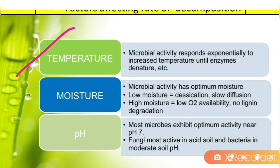These are the factors which affect the rate of decomposition. First, temperature: microbial activity responds exponentially to increasing temperature until enzymes denature. Microbial enzymes are active at optimum temperature, which must be maintained, otherwise decomposition will not happen. Second, moisture: moisture is required for microbial growth, and optimum moisture must be maintained for enzymes to remain active.